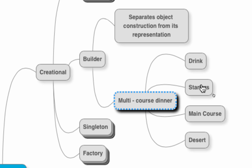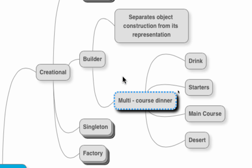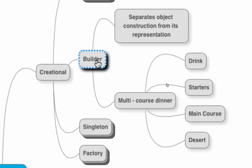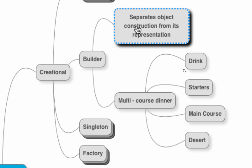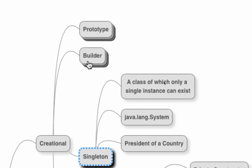The representation of the dinner is that it has a drink, starters with multiple options, a main course, and a dessert. However, to construct this we provide a simple interface — someone who wants a multi-course dinner just specifies what they want and we take care of constructing all the objects. We are separating the creation from the internal representation. Even though the internal representation is complex, we provide an easy interface to the outside world. That is what the builder pattern is all about.